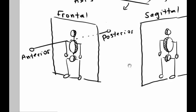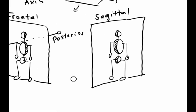The sagittal plane corresponds to the left-right axis. So again, using the shoulder as an example. The left-right axis.